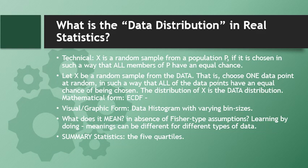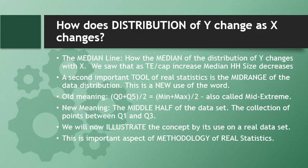The summary statistics for the distribution are the five quartiles, which we have discussed earlier. With this understanding, we can answer how the distribution of Y changes as X changes. We have already discussed the median line — it shows how if you fix X at a certain value or range, you examine the median of Y, then change the values assigned to X and see how the median changes. This is one summary statistic telling you how the distribution changes as X changes.